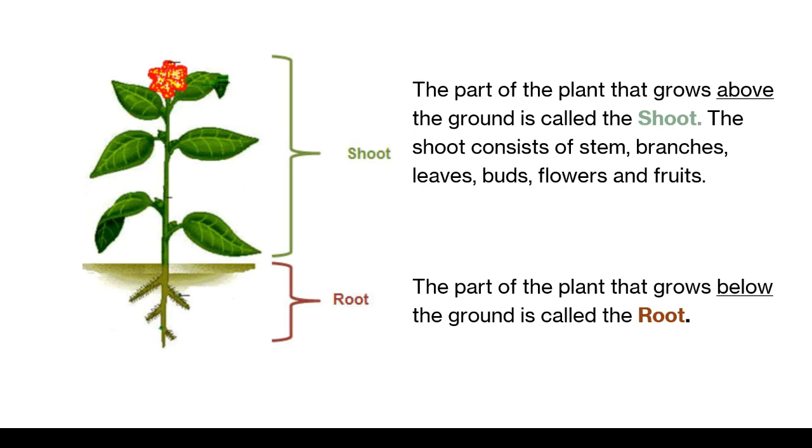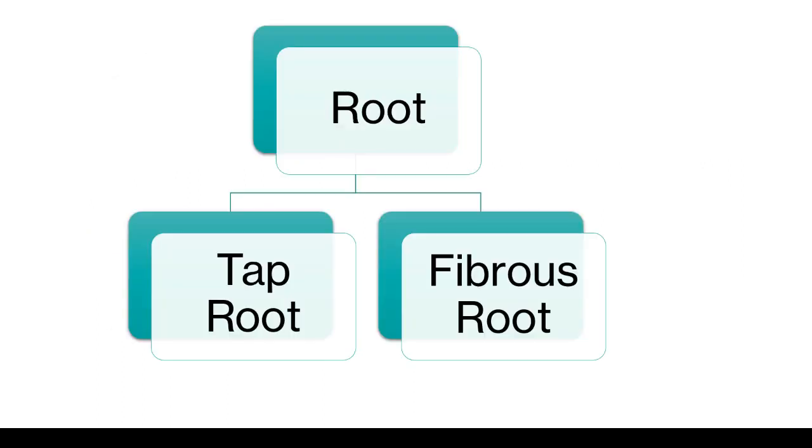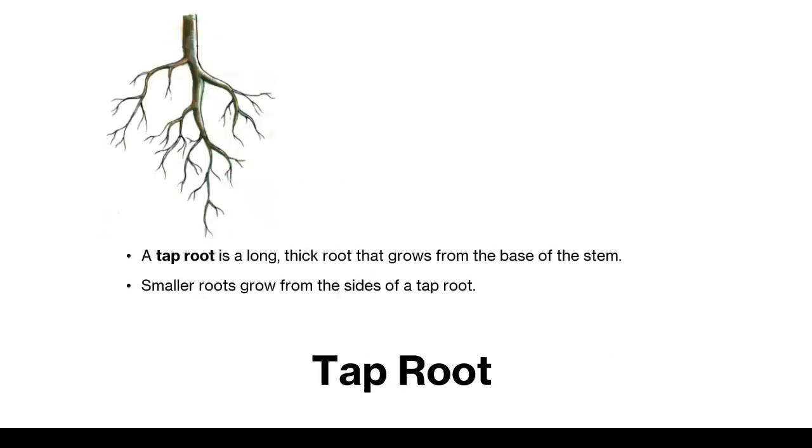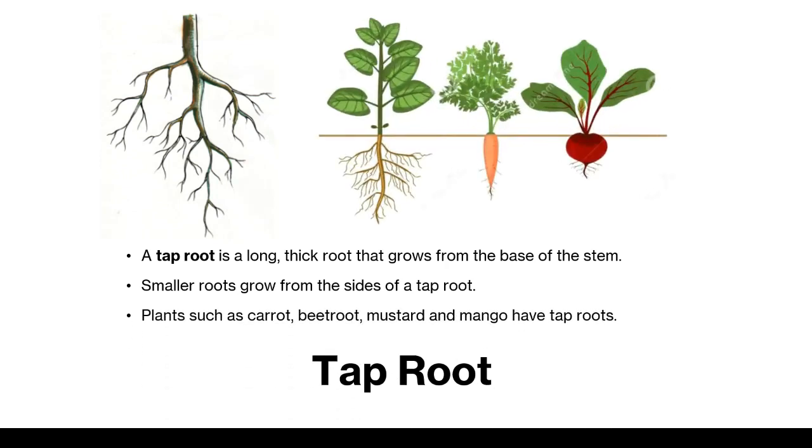We will now discuss the root in some more detail. A taproot is a long, thick root that grows from the base of the stem. Smaller roots grow from the sides of a taproot. Plants such as carrot, beetroot, mustard and mango have taproots.